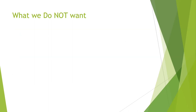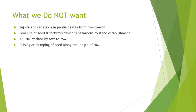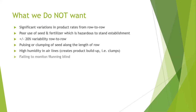What do we not want to do? We don't want significant variations in product rates from row to row. Not only is it a poor use of seed and fertilizer, but it can be hazardous to stand establishment if fertilizer rates down the seed row are varying and you're too close to the danger zone. It's very common for stock OEM air drills to have plus or minus 20% variability row to row, but with some attention to detail it is fairly easy and affordable to get this down to plus or minus 2% or less. An even worse yield robber than row-to-row variability is pulsing or clumping of seed in your airlines. We don't want high humidity creating product buildup, and we do not want to run blind without monitoring seed and fertilizer distribution.